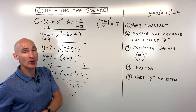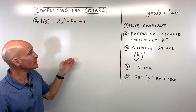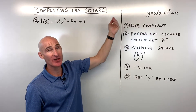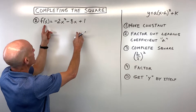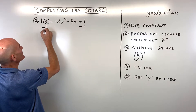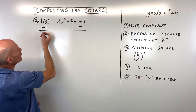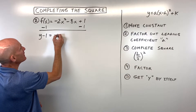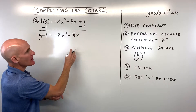Let's take a look at a slightly more challenging example. Step one: move the constant to the other side of the equation to get it out of the way. We're going to subtract this one over to the other side, keeping the equation balanced. F(x) is like y, so we write y minus one equals negative two x squared minus eight x.